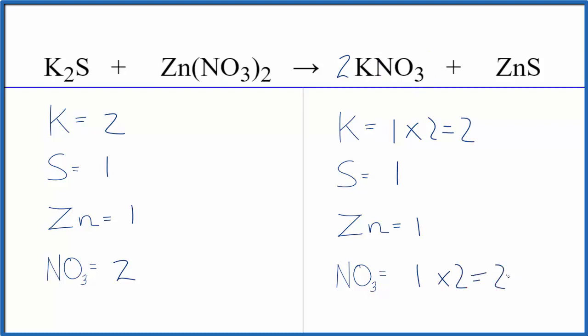We're done. This equation is balanced. So that's very useful. If you have a polyatomic ion that shows up on both sides, just count it as one thing.